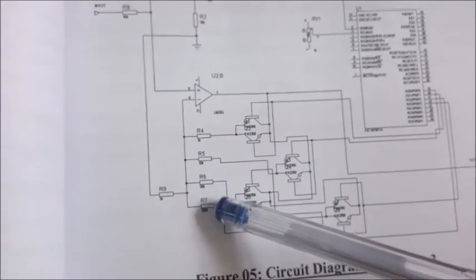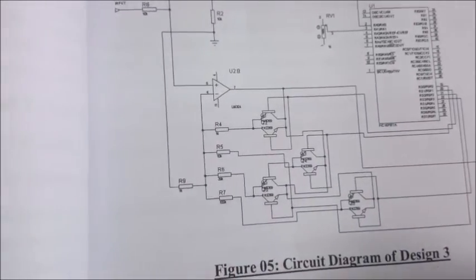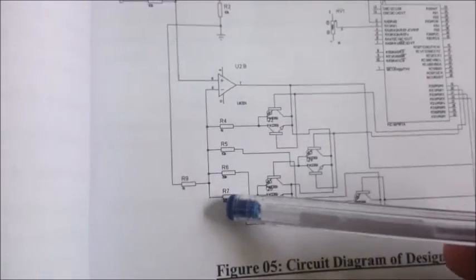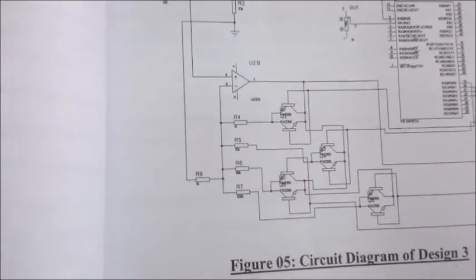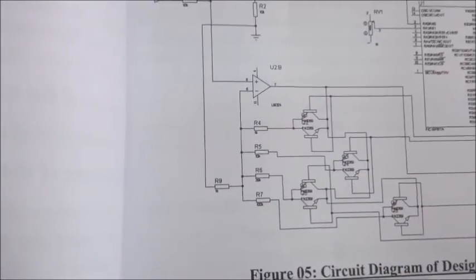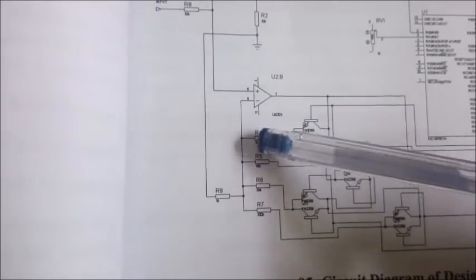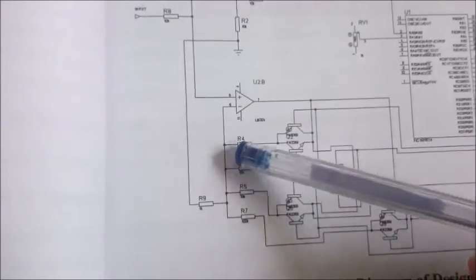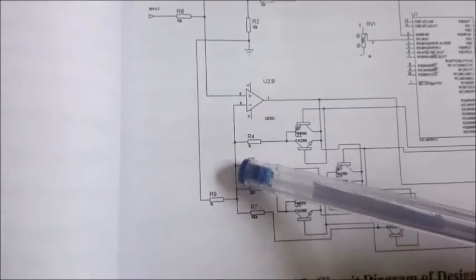If the input signal is higher than the reference level, then the microcontroller will switch to a low amplifier gain and reduce the amplifier gain. It also switches to a high amplifier gain if the input signal RMS is lower than the reference level.